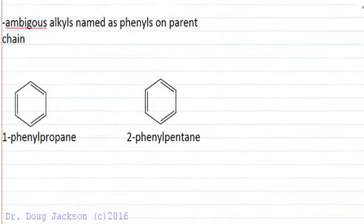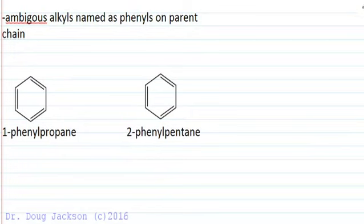But if the side chain name is ambiguous, we have to name the benzene as a phenyl group on the parent chain. So 1-phenylpropane looks like this. One, two, three carbons where the parent chain is actually propane because 2-propane is isopropane or isopropyl. So isopropylbenzene is an acceptable name because isopropyl is unambiguous. But when we say propane, it could be the one or the two position. So we have to say 1-phenylpropane. Generally anything larger than an ethyl group is going to need this system of nomenclature. We could also have 2-phenylpentane. The parent chain is pentane, 1, 2, 3, 4, 5, and we connect at the two position of pentane.